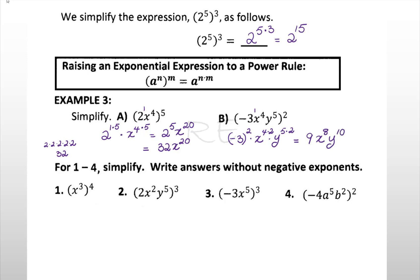x to the third to the fourth is x to the 3 times 4, which is x to the 12. We distribute the exponent to each factor: it becomes 2 to the third (3 times 1), x to the 6 (3 times 2), and y to the 15 (3 times 5). 2 to the third is 8, so the result is 8x to the 6th, y to the 15th.